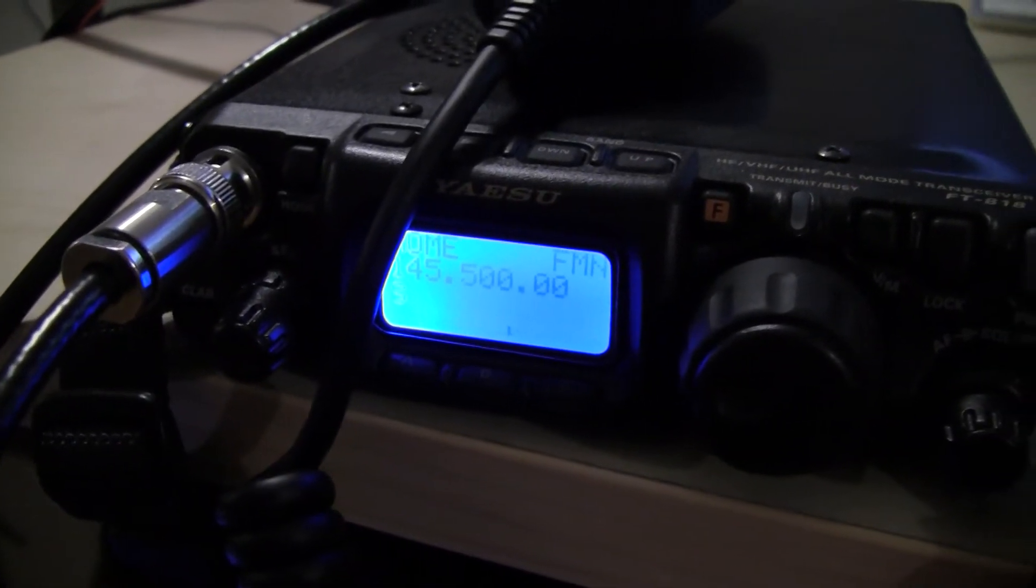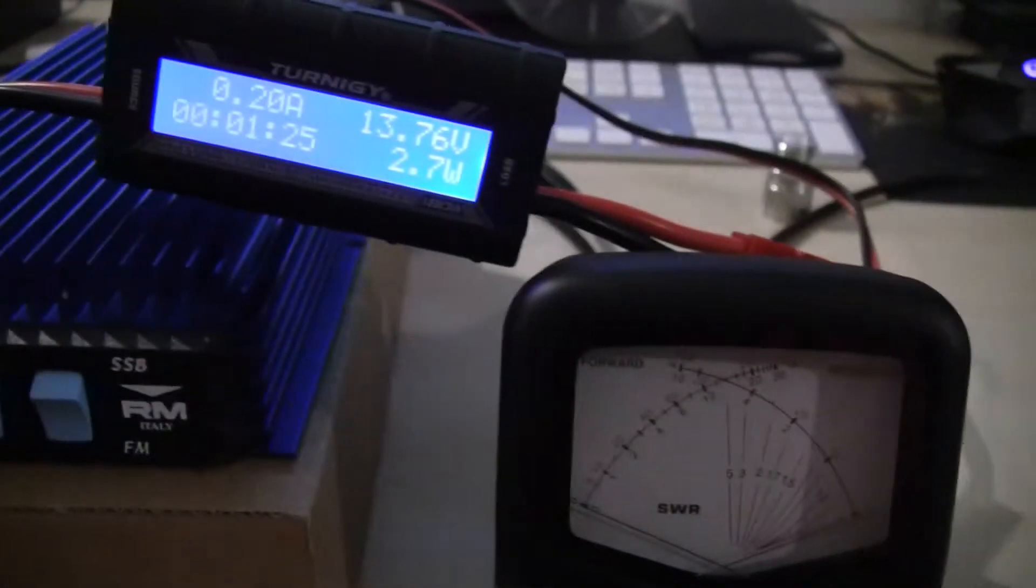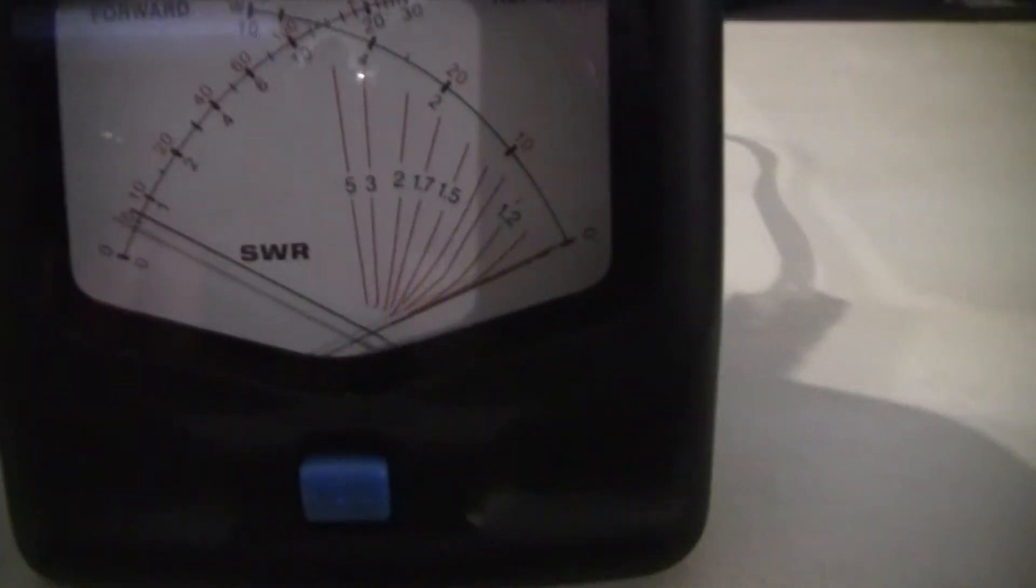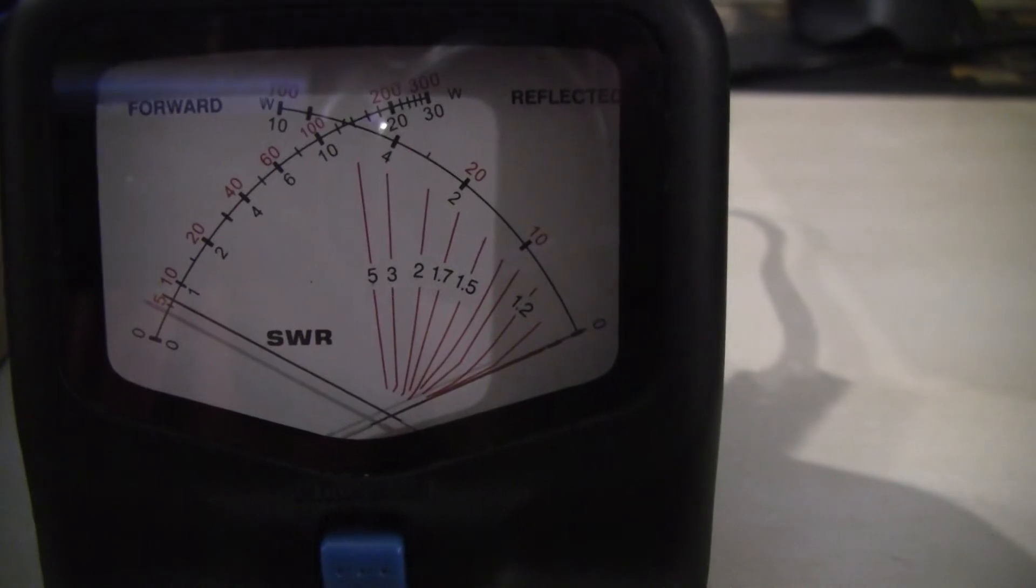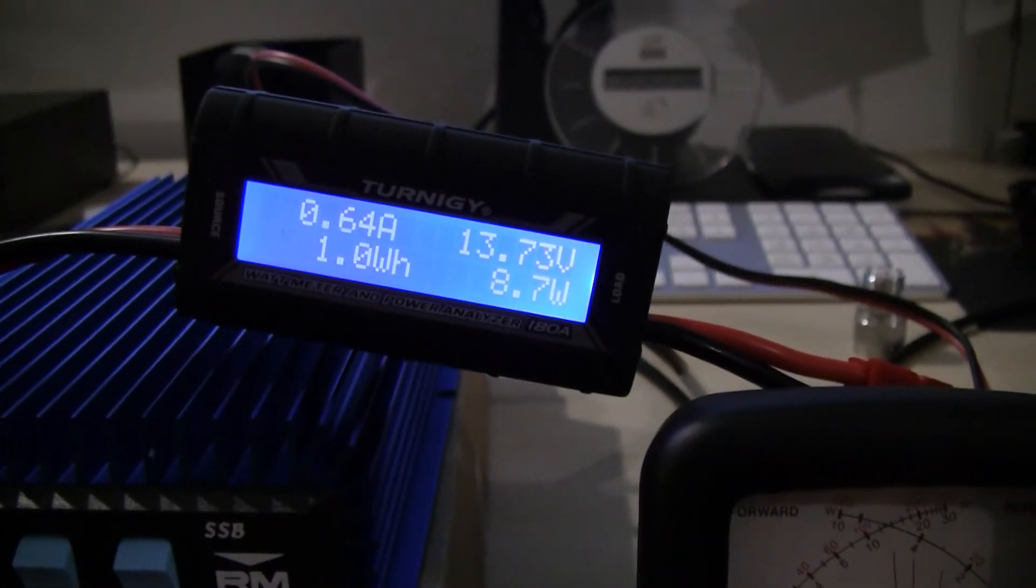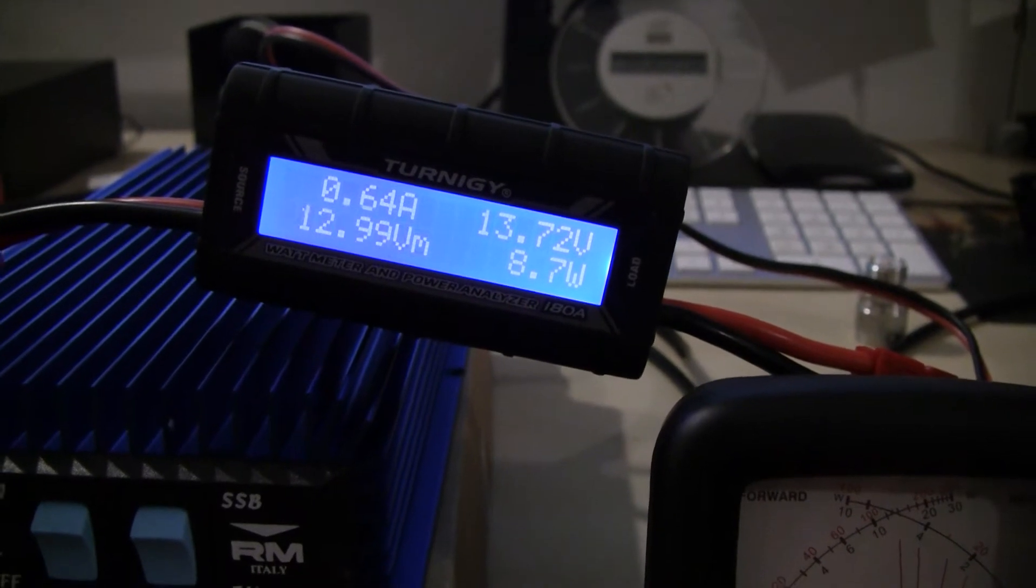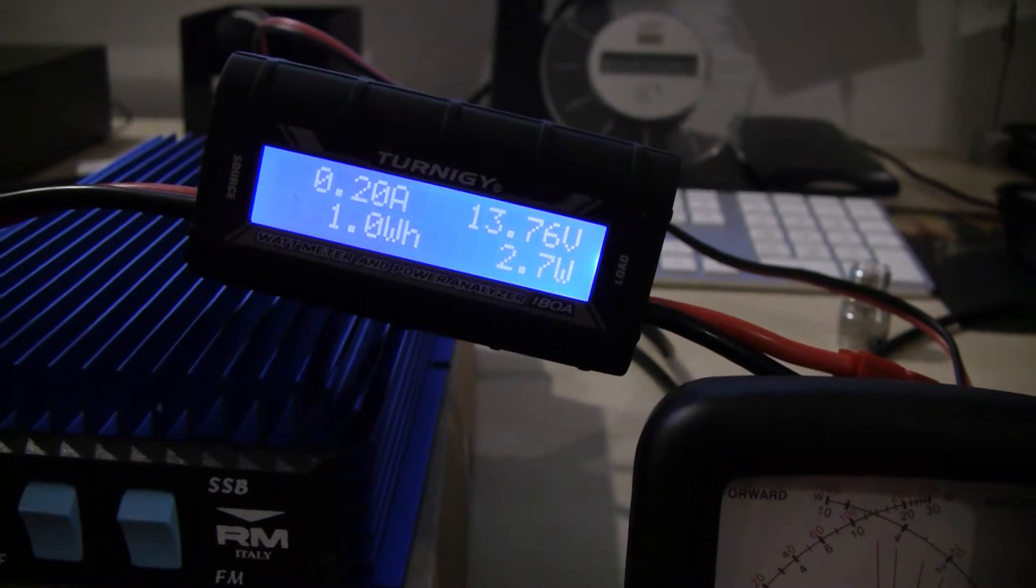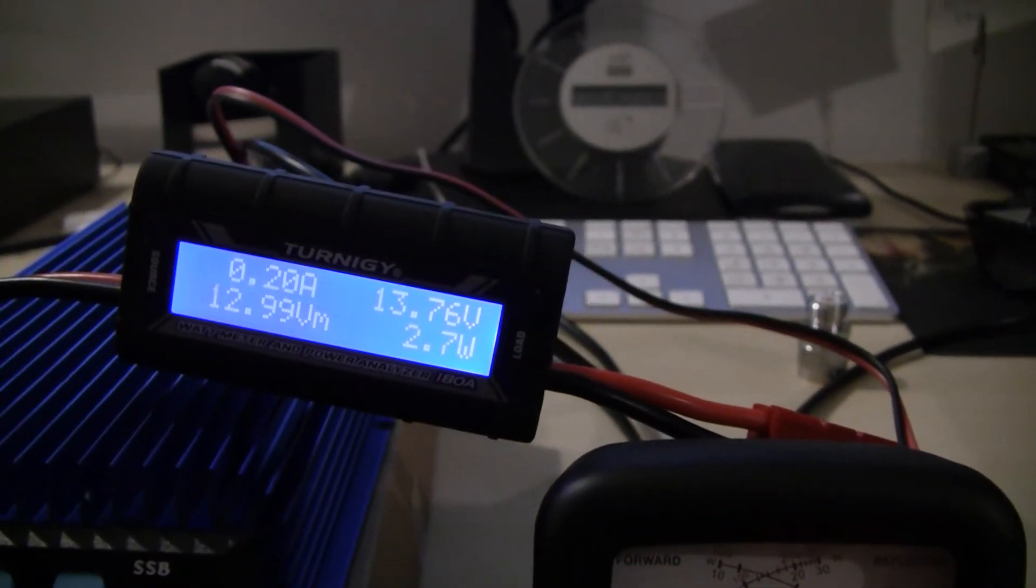Okay, so this is the lowest power setting on the FT818 and I will now key up. Now we see here about half a watt of input power. I also noticed that the current draw increased here. If I release, it's again off. So we had like half a watt without the amplifier.